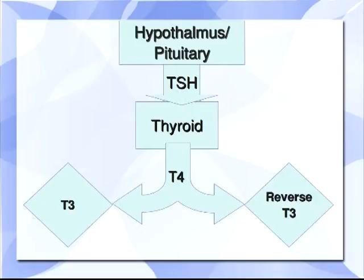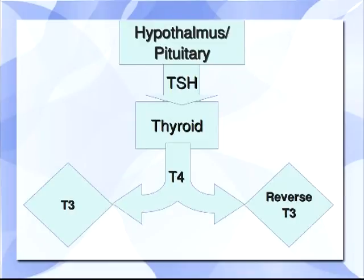On this chart, we can see that from the hypothalamus and pituitary, TSH, or thyroid-stimulating hormone, is produced, and that tells the thyroid to produce mostly T4. Then T4 is going to be converted outside the thyroid into either T3 or reverse T3. It's important to realize that a block anywhere can cause a functional thyroid problem. If TSH is low, then the thyroid won't be told to make enough T4, but there can also be problems in the conversion of T4 to T3, or there might be an increased conversion of T4 into reverse T3.